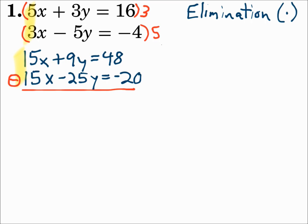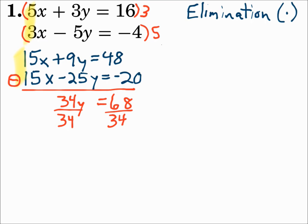15x minus 15x is 0. Watch your signs here: 9y minus negative 25y is 34y — minus a negative means plus a positive. And 48 minus negative 20 is 68. Be careful when you subtract the negative. So the x is eliminated. Now divide both sides by 34, and y is 2.